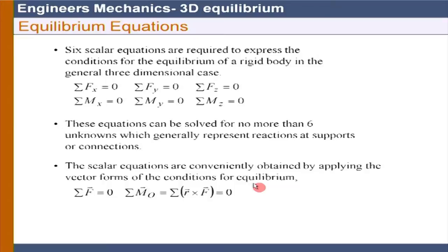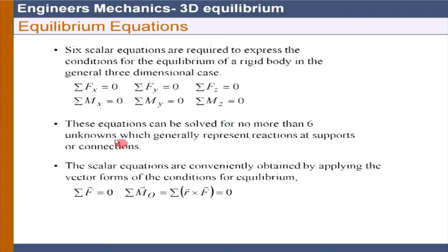For a single rigid body in 2D equilibrium, we can solve 3 support reactions, and if so, the problem is statically determinate. In 3D equilibrium, we are now going to get 6 scalar equations required for equilibrium. These 6 equilibrium conditions — 3 force equations and 3 moment equations — can be used to solve no more than 6 unknowns, which generally represent reactions at supports or connections.